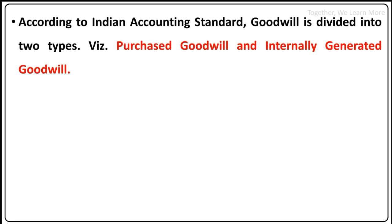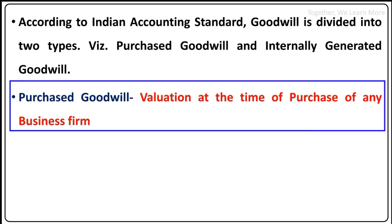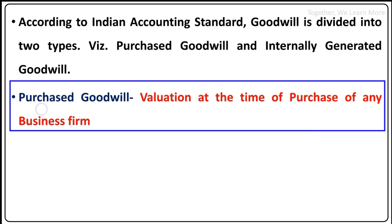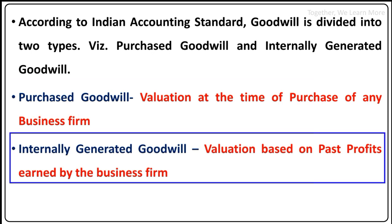The difference between these two: Purchased Goodwill is valued at the time of the purchase of any business. If you are going to buy some business and merge it into your own, then you think about what the goodwill of that business is — its valuation. That is known as Purchased Goodwill.